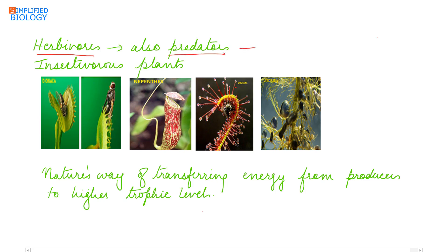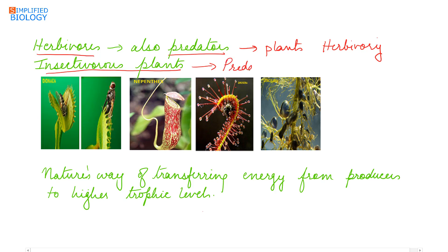Herbivores are also predators, as they feed on plants that are the producers — this is referred to as herbivory. Insectivorous plants, meaning plants that feed on insects, are also predators. Examples of such plants are Dionaea (Venus flytrap), Nepenthes (pitcher plant), Drosera (sundew), and Utricularia (bladderwort).